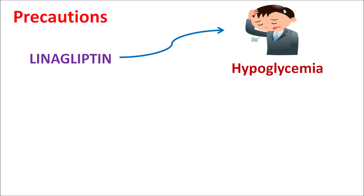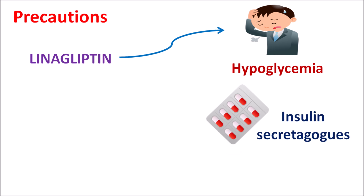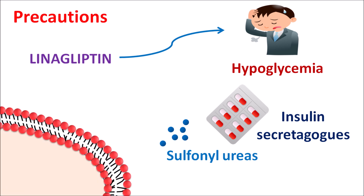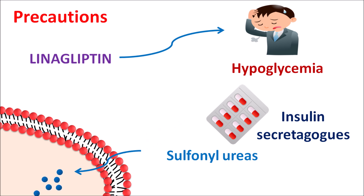This is more important when linagliptin is combined with insulin secretagogues. For instance, sulfonylureas are one category of drugs which can increase insulin secretion. These sulfonylureas can directly act on the beta cells to inhibit the ATP-sensitive potassium channels. When these potassium channels are blocked, beta cells are depolarized resulting in the secretion of insulin. Since linagliptin and sulfonylureas both increase insulin secretion, when combined a significant hypoglycemia can be produced. That's why when sulfonylureas are combined with linagliptin, the dose of sulfonylurea should be reduced to prevent severe hypoglycemia.